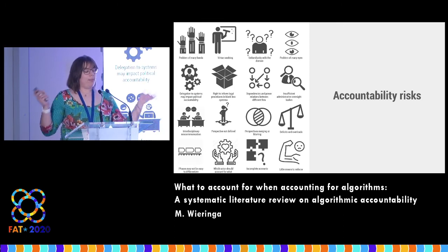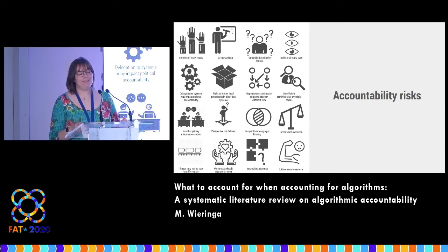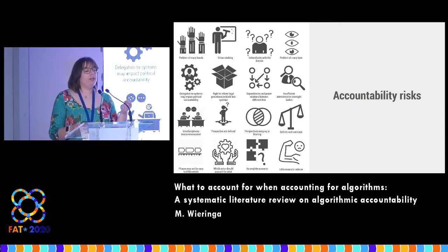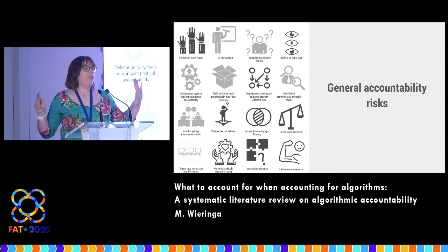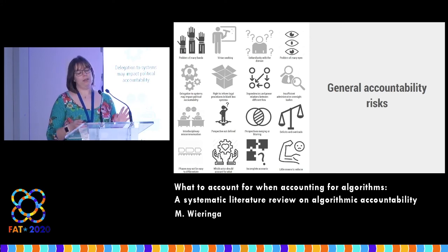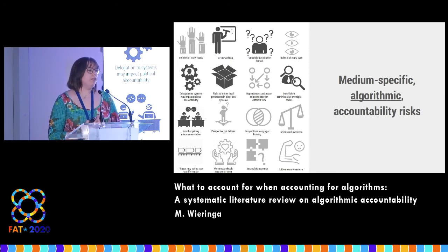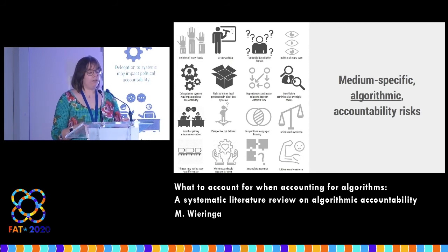I promised to spend a little time on accountability risks. Unfortunately this is an eight-minute paper, so I don't have time to go through all of them. But there are two kinds: general accountability risks, which are not unique to algorithmic systems, and medium-specific algorithmic accountability risks, which are unique to algorithmic systems.